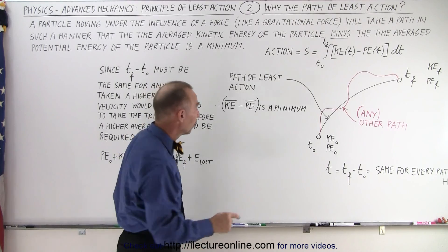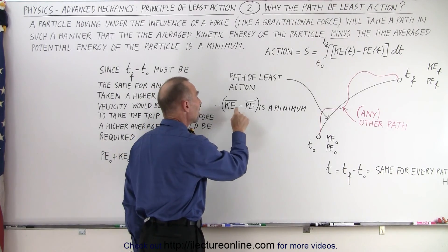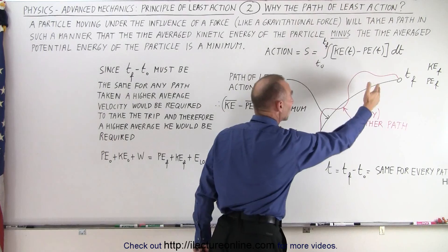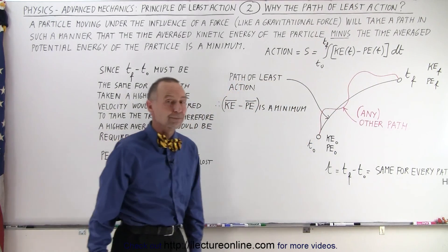In other words, the average kinetic energy minus the average potential energy along the path will be a minimum.